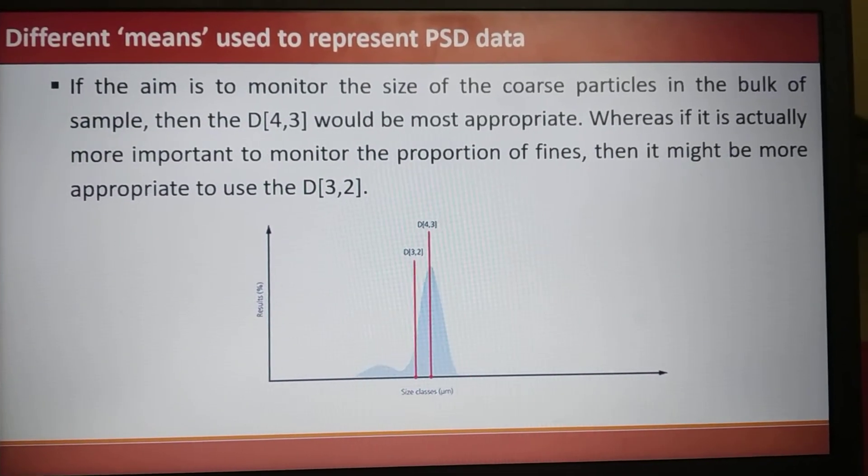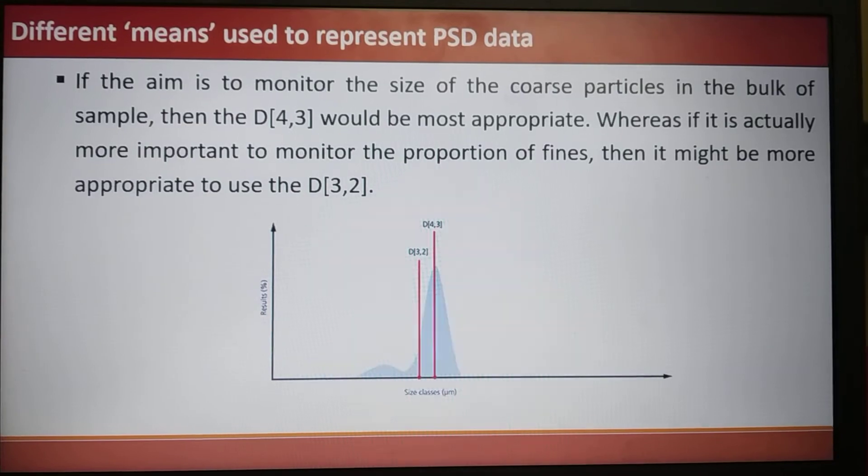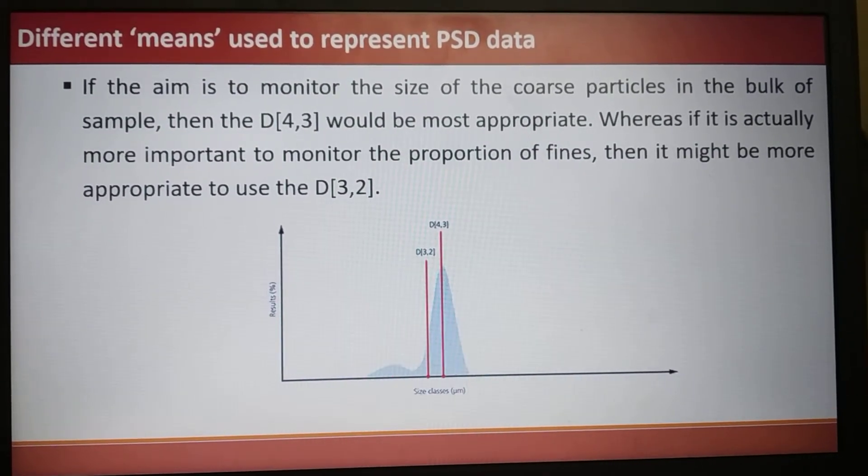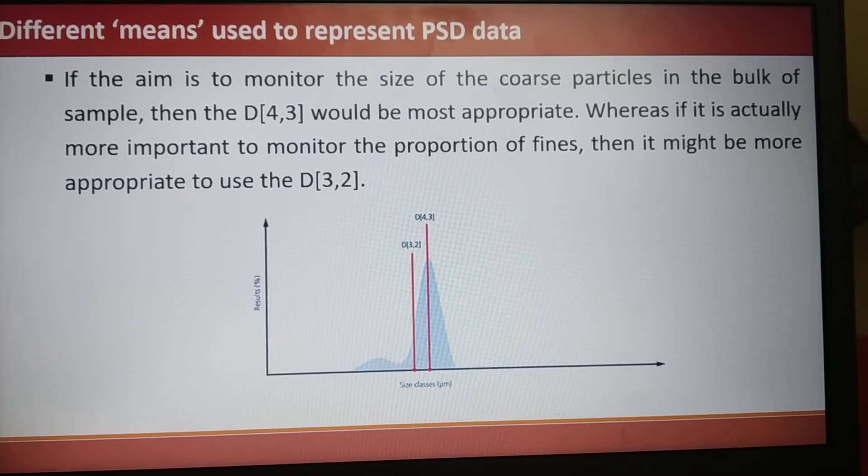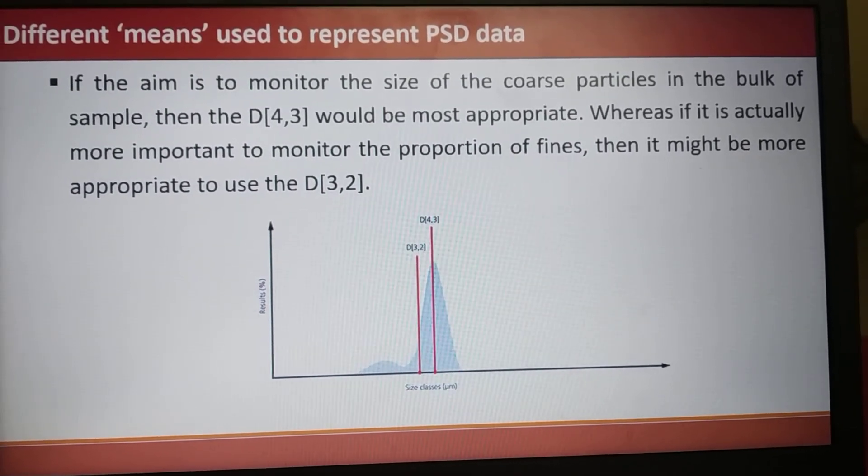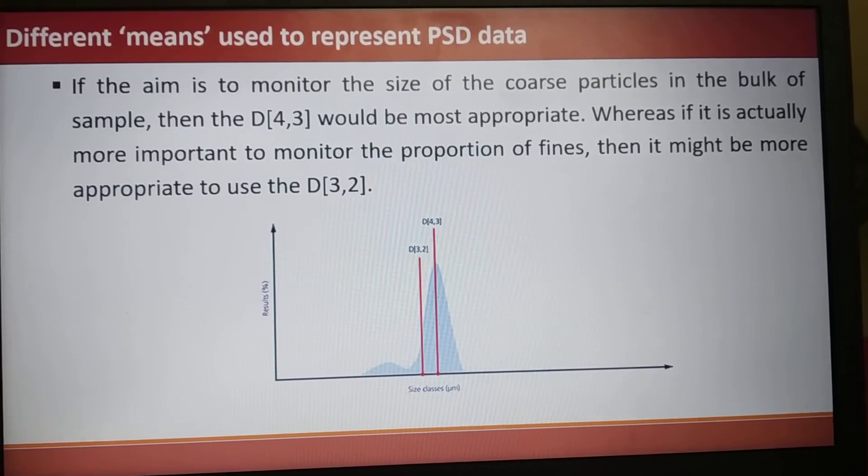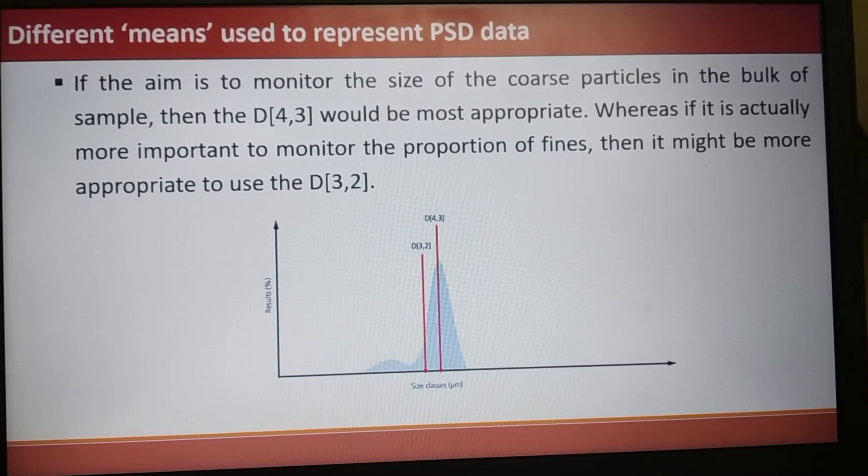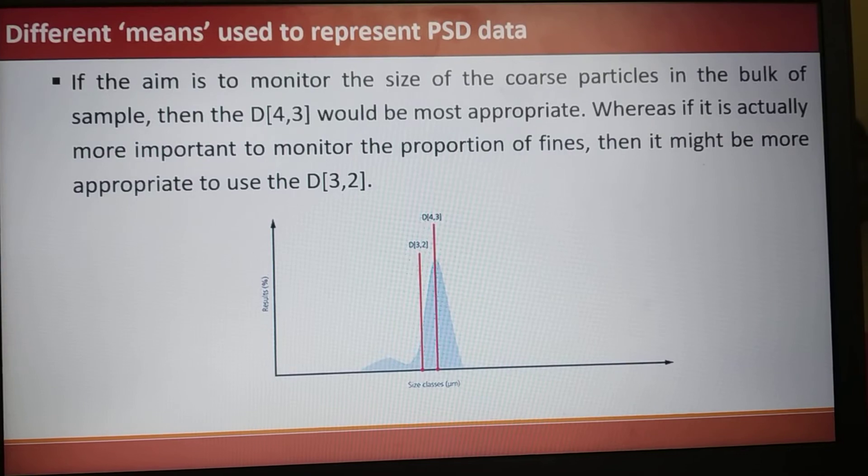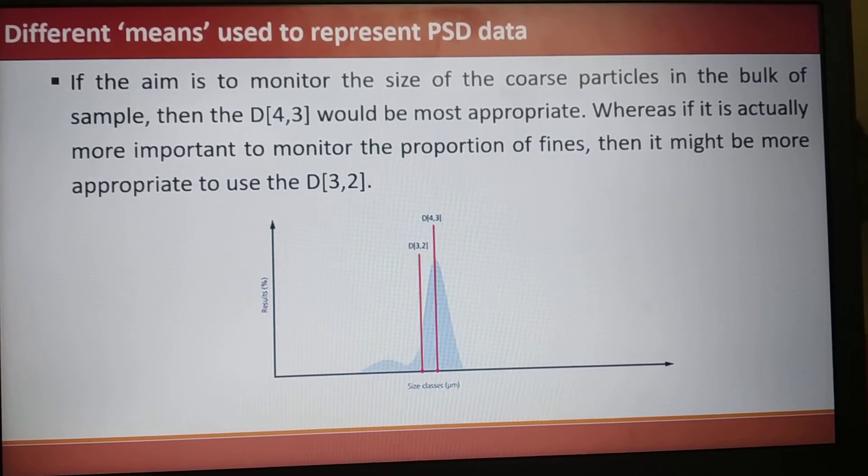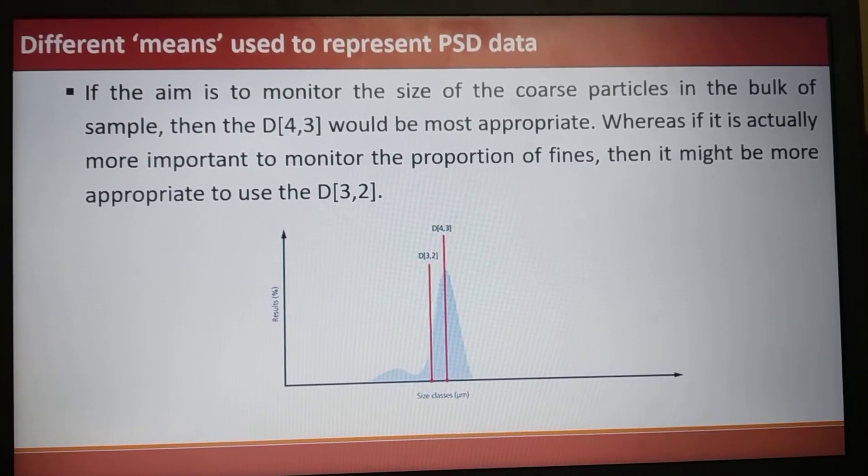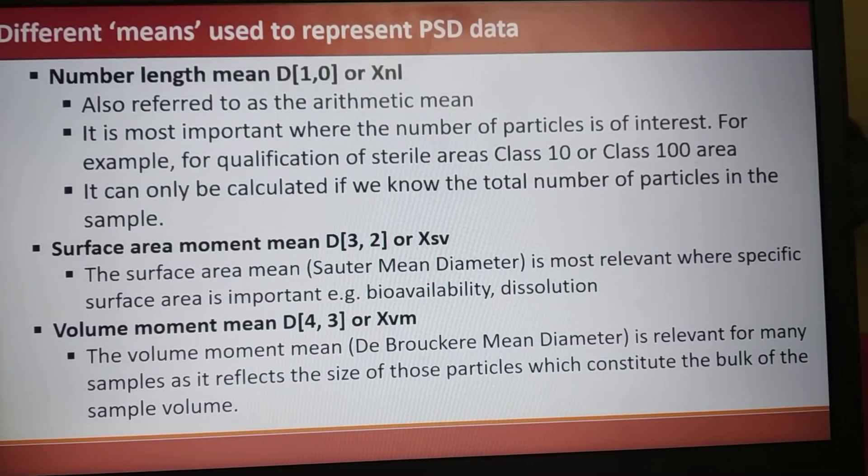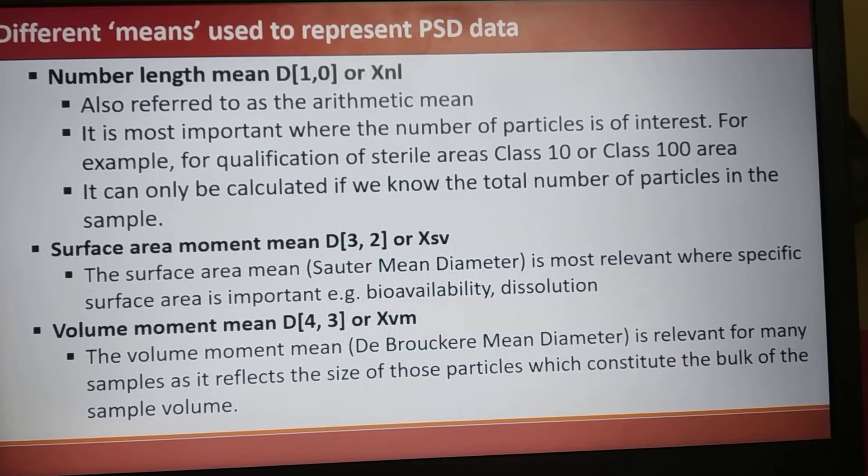This is a very important note: If we aim to monitor the size of a coarse particle in the bulk of the sample, then D[4,3] or volume moment mean would be more appropriate. Whereas if it is more important to monitor the proportion of fines, then it might be more appropriate to use the D[3,2] or surface area moment mean.